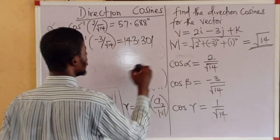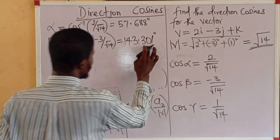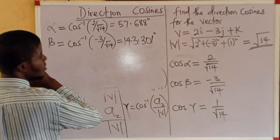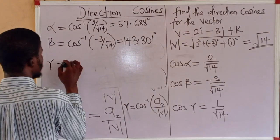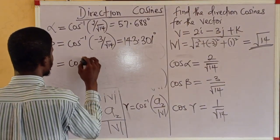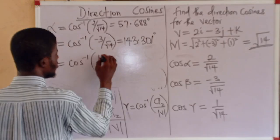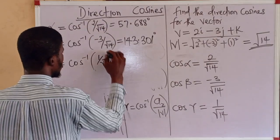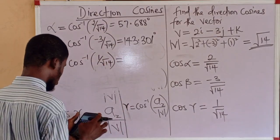And gamma is the cos inverse of 1 upon root 14. So, what would that be to 3 decimal places?